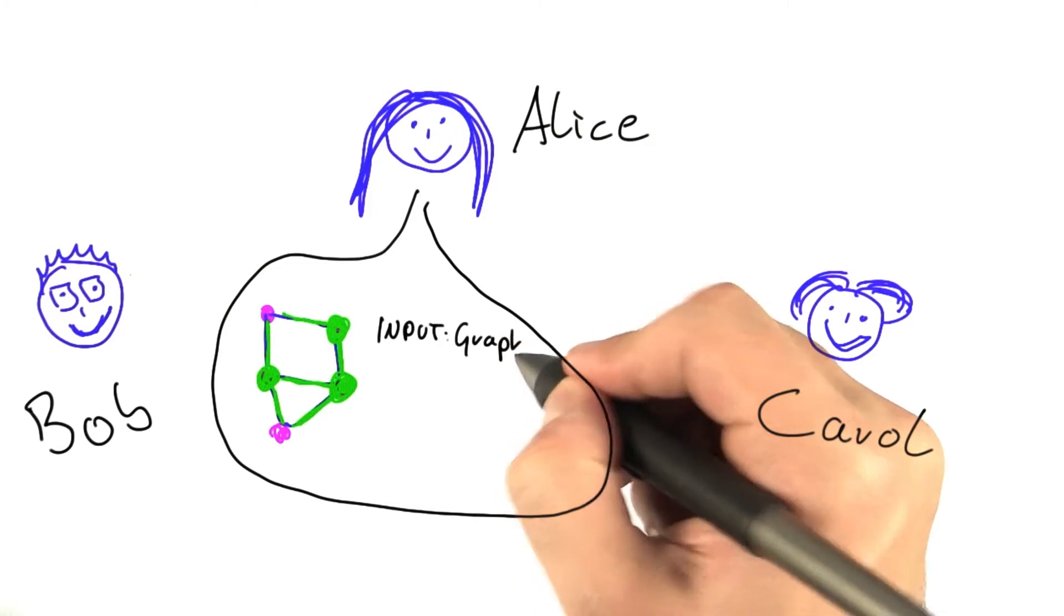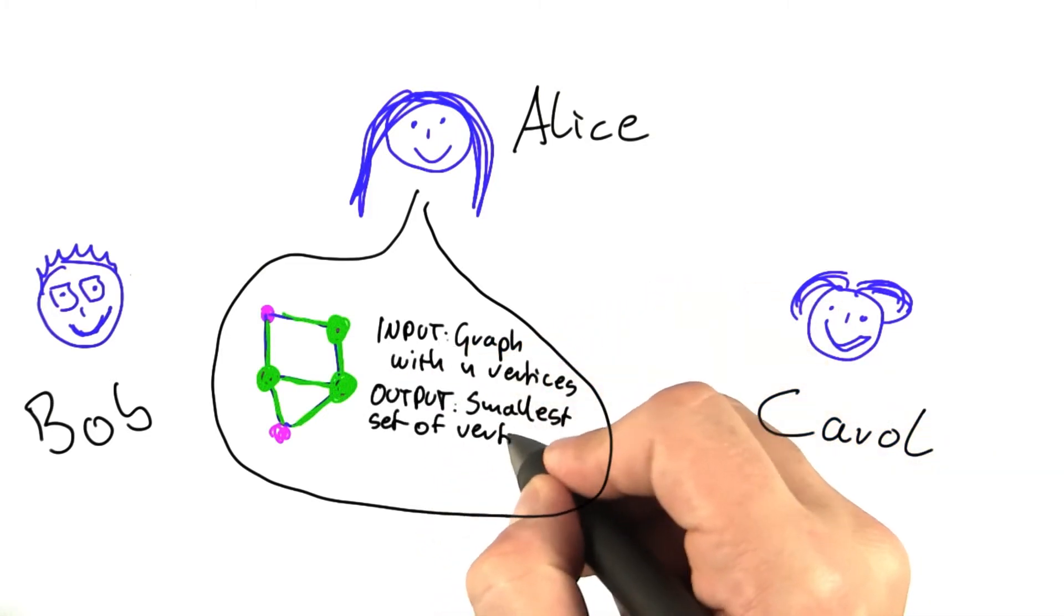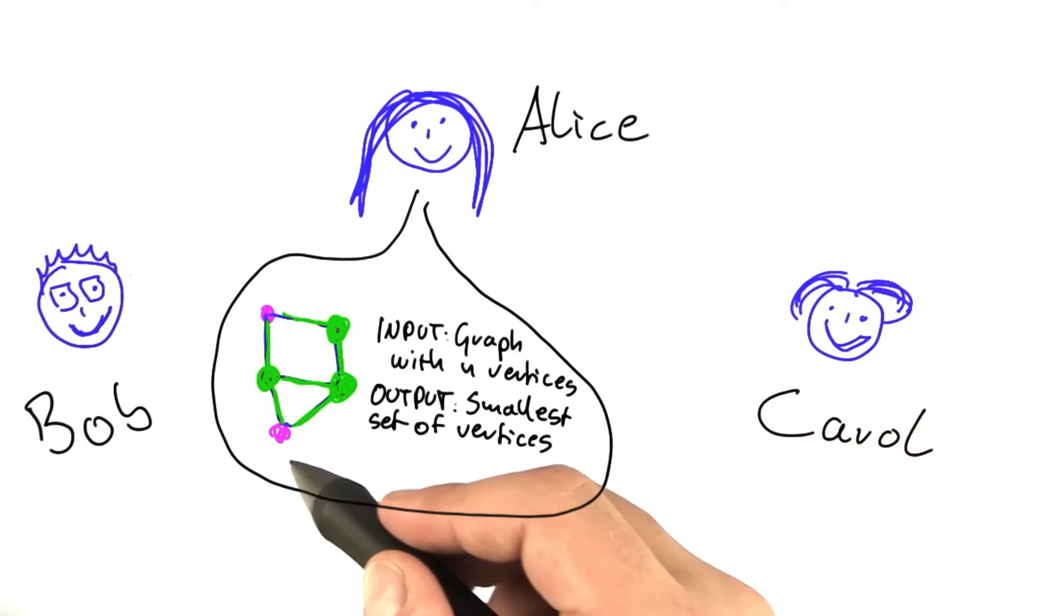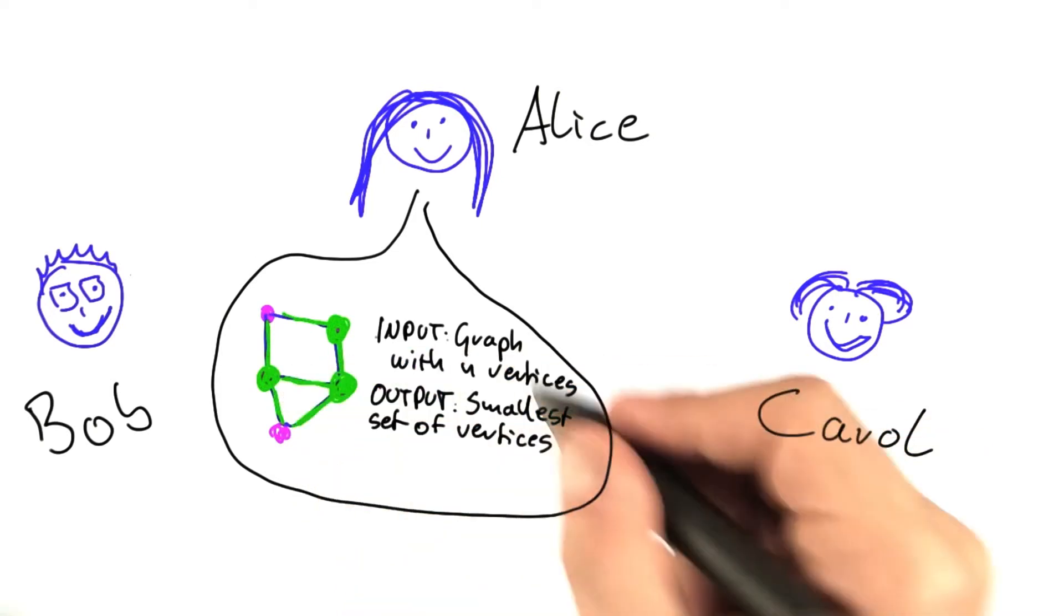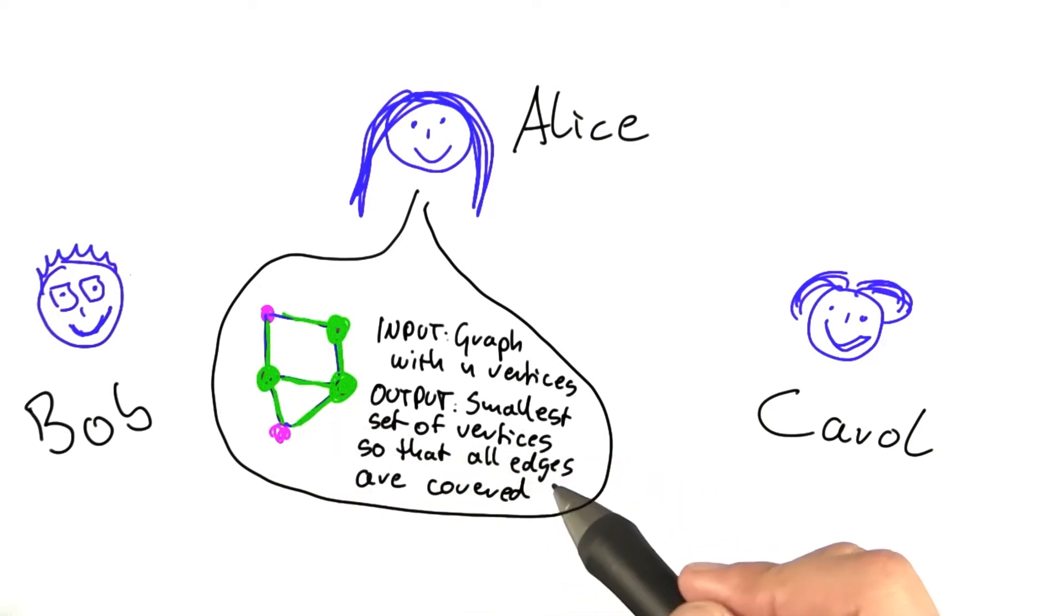So the input for Alice's problem is again a graph with n vertices, and the output is the smallest set of vertices such that all edges are covered. By covered, I mean that each edge has at least one endpoint in that set of vertices.